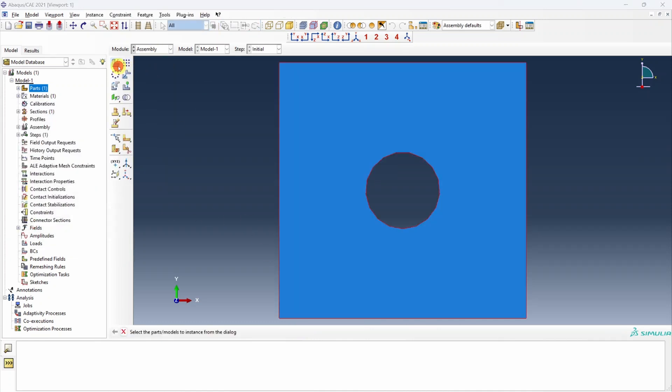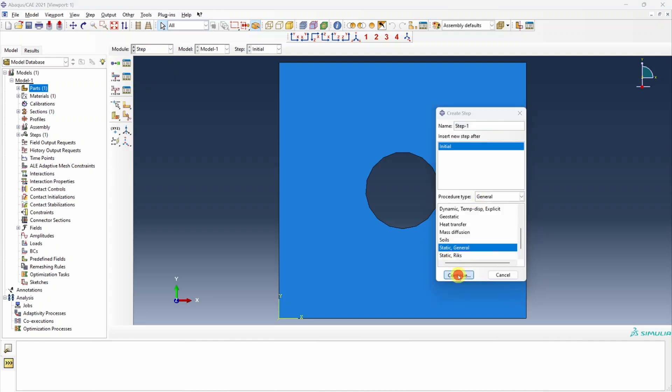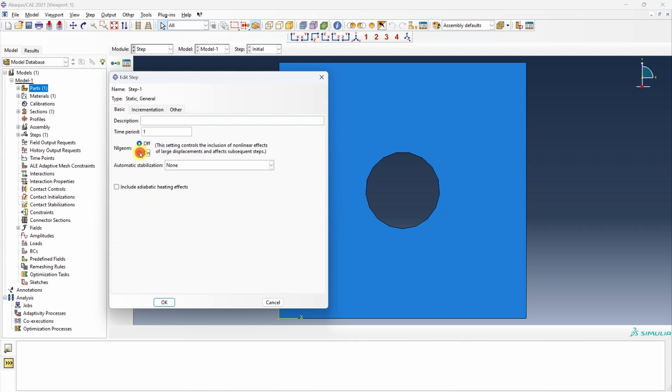Let's go to assembly, create one instance. Next step we will create static general step. Because the strain is large I am going to turn this on. These are non-linear effects. Time period I will keep it as 1 and this initial increment I will change to 0.1 with maximum increment also 0.1.